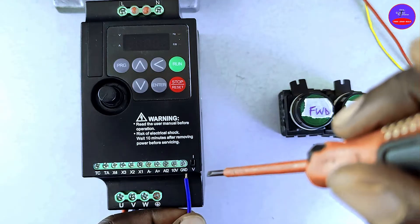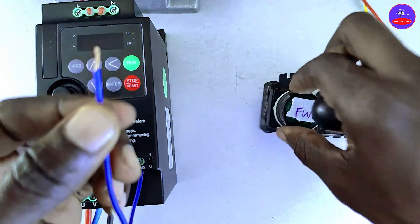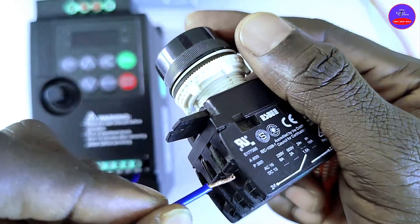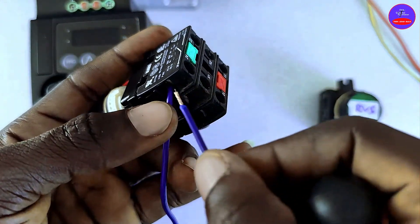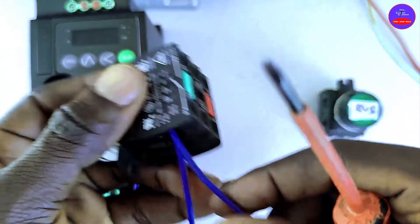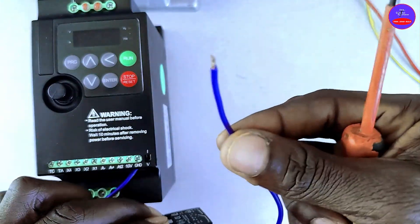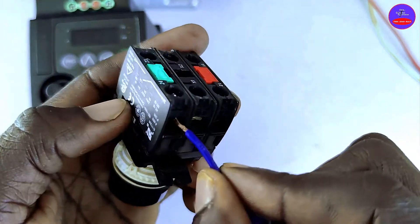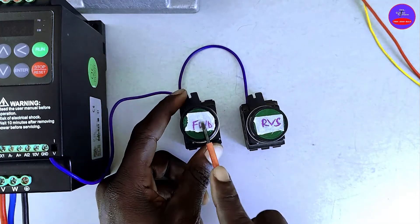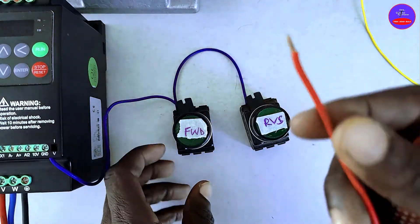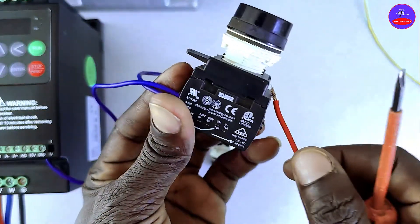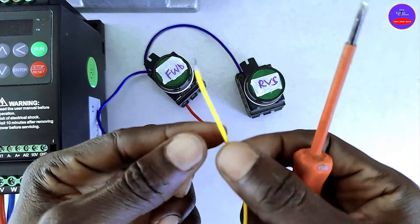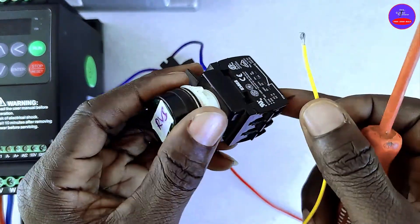We connect a cable at the ground. Then it goes to one side of the forward button. We are using the normally open. Then we tap from the same side. This cable goes to one side of the reverse button. We are using the normally open. We connect the red cable at the other side. We connect the yellow cable at the other side of the reverse button.